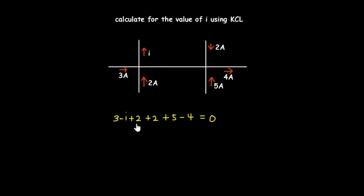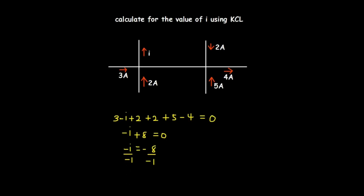Simplifying: 3 plus 2 plus 2 plus 5 gives 12, then minus 4 gives 8. So we have minus i plus 8 equals zero, which gives minus i equals minus 8, therefore i equals 8 amperes — a positive value. When the current is moving towards the node it is positive, and moving away it is negative. Since we got positive 8 amperes, the current i is actually moving towards the node, not away from it.